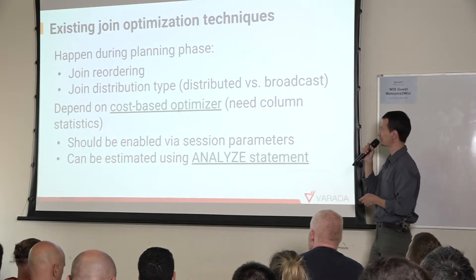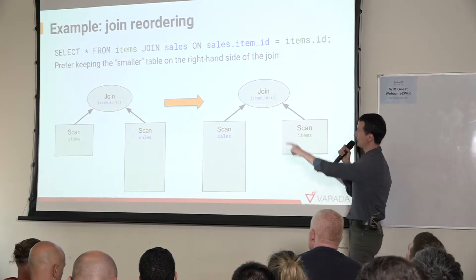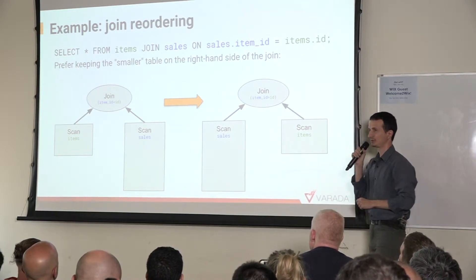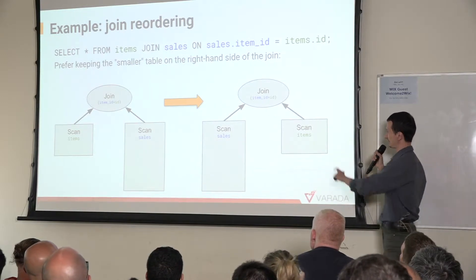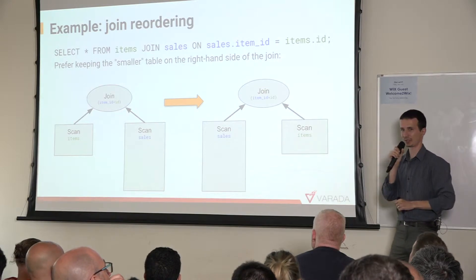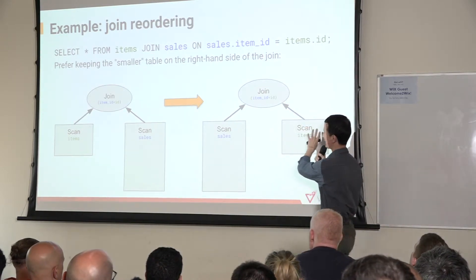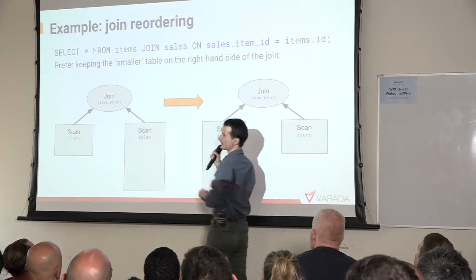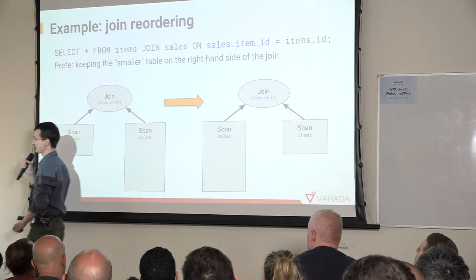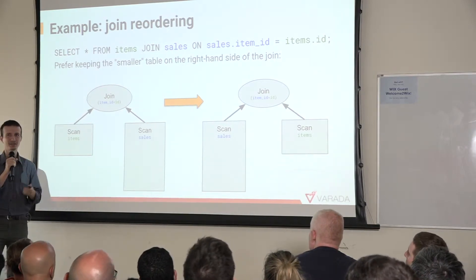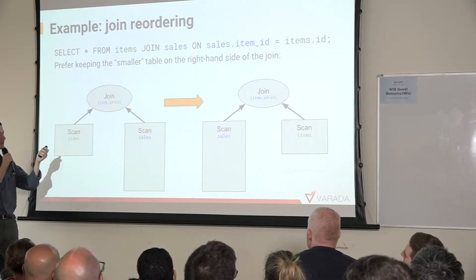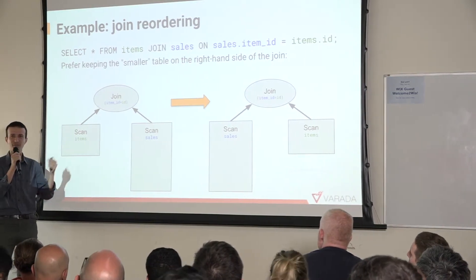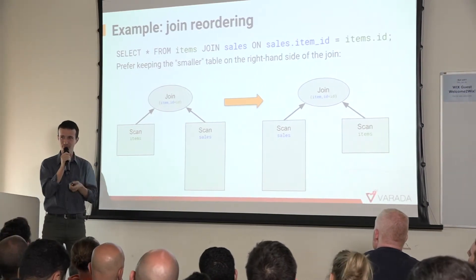Starting with join reordering: consider a query joining a large table — the sales table — with a small table, the item table. Presto reads the right-hand side table into memory before doing the join, so we prefer the smaller table on the right-hand side and the larger on the left. You can do this manually by flipping the order of tables, but it's tricky for large queries. Alternatively, you can enable this optimization via a session parameter, and if the table can tell Presto how large it is, Presto can do it automatically.